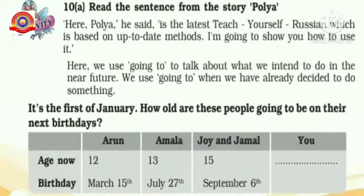It's the 1st of January. How old are these people going to be on their next birthdays? Arun is now 12 years old and his birthday is on March 15th. Amala is 13 years old and her birthday is on July 27th. Joy and Jamal are 15 years old and their birthday is on September 6th. From this data, you have to make sentences using 'going to'.